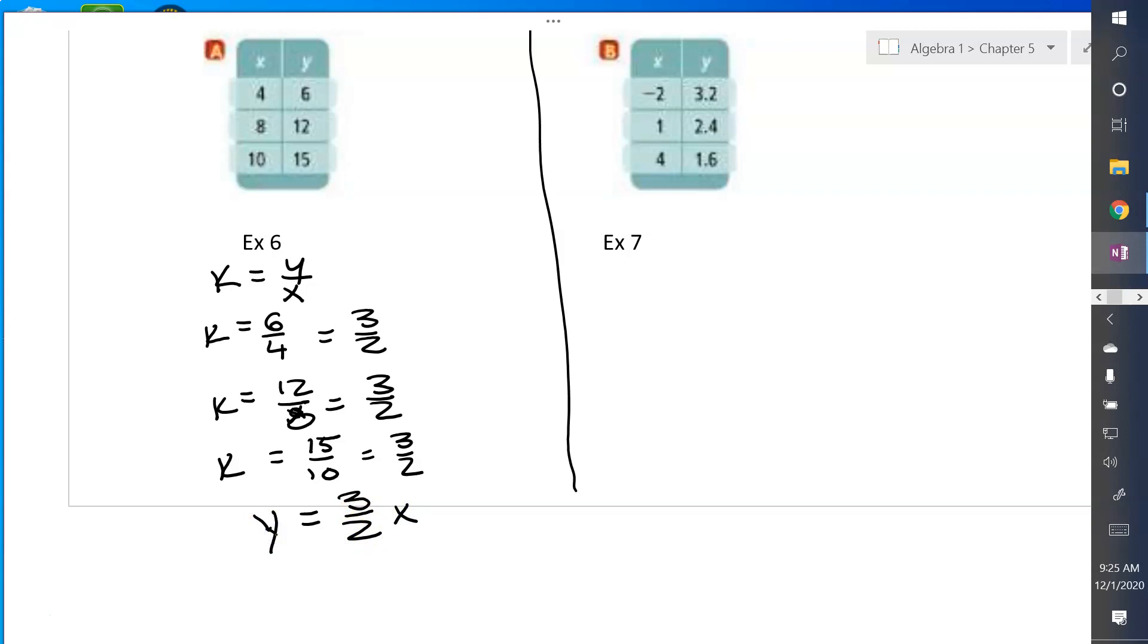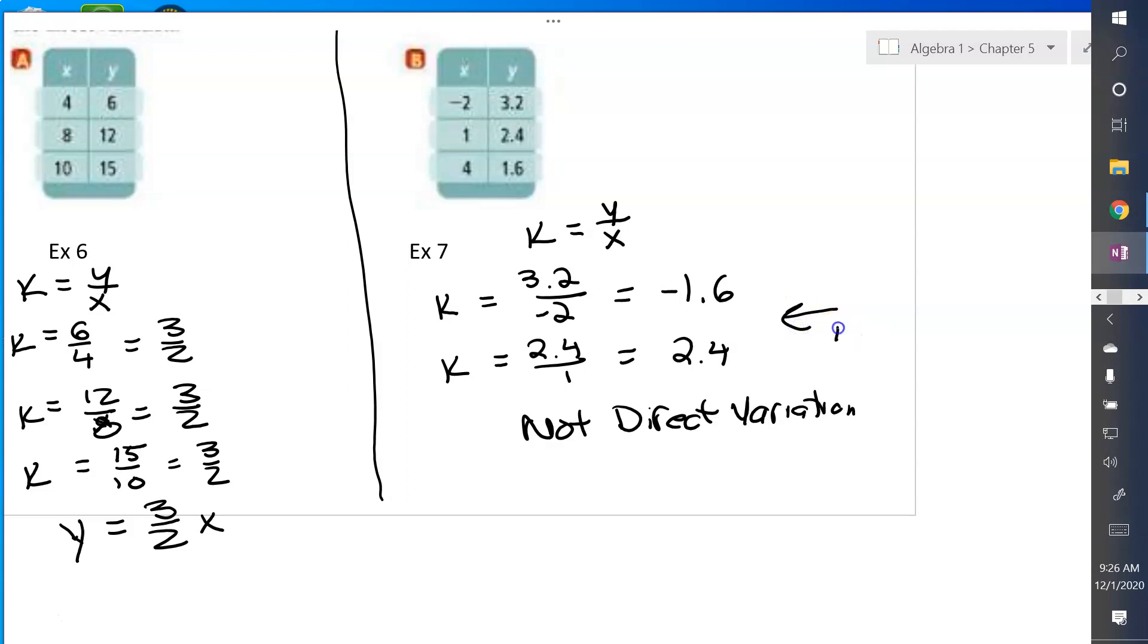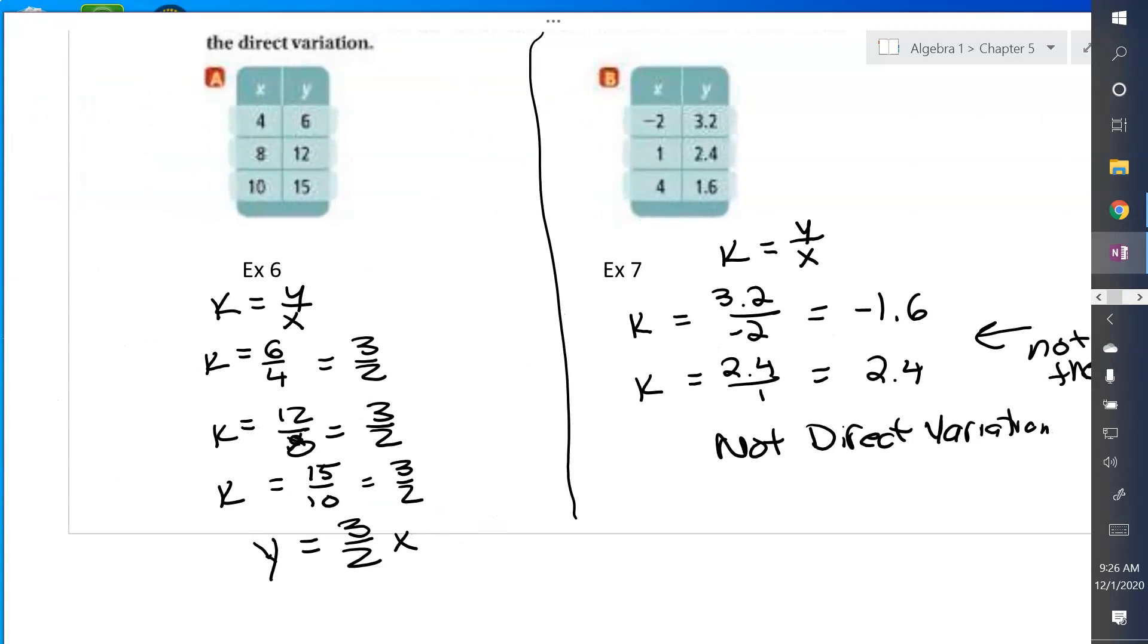Now let's look at example 7. And we're just going to play the same game. K equals y over x, and let's check each set of ordered pairs. So first row, k equals 3.2 over negative 2, I get negative 1.6. Second row, k equals 2.4 over 1, and I get 2.4. That's not the same. So you can just stop right here and say this is not a direct variation, because those two are not the same. If they had been the same, then I would have to keep going just to make sure that the third set was also the same.